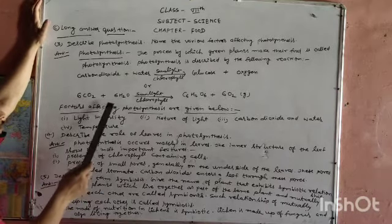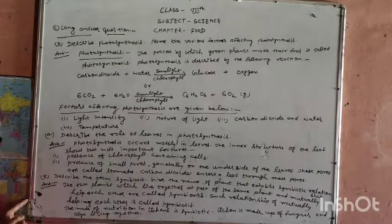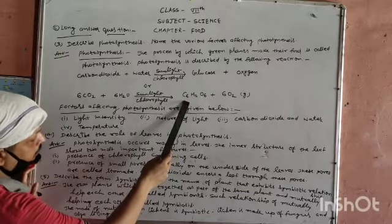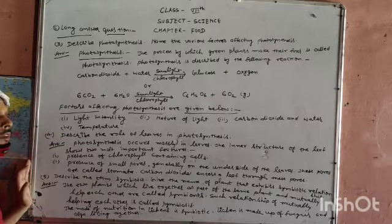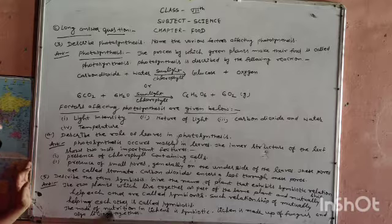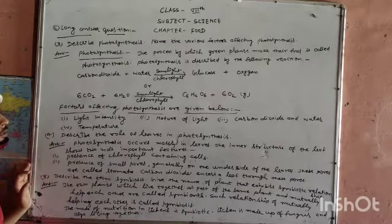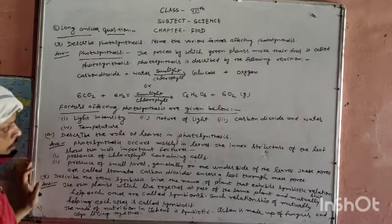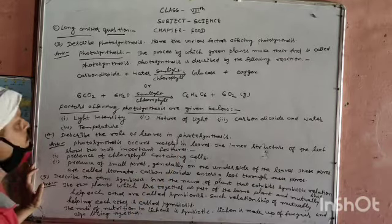6 CO2 plus 6 H2O in the presence of sunlight and chlorophyll produces C6 H12 O6 plus 6 O2.